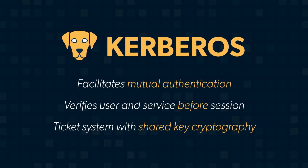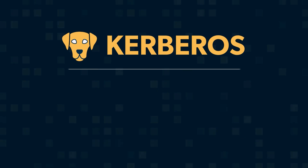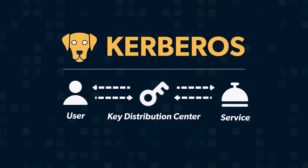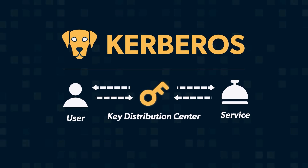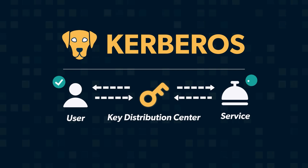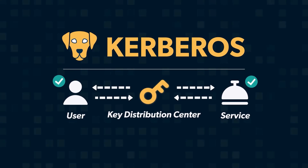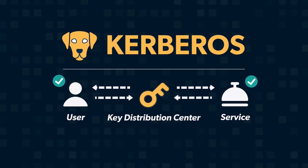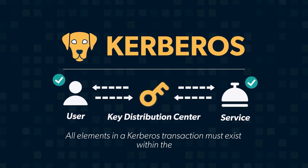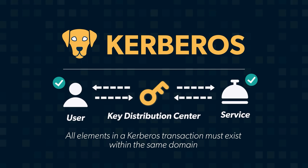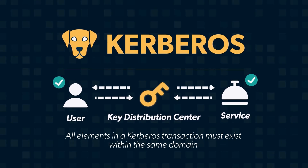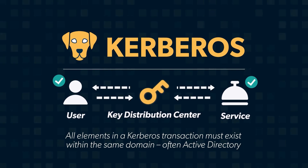It sends a series of encrypted messages and tickets amongst the user, the service, and a key distribution center, which is hosted by the domain controller. In this transaction, both the client and the service authenticate their identities before the client can begin a session. It's important to note that all elements in a Kerberos authentication transaction must exist within the same domain. Because Kerberos is commonly used by Microsoft, that domain is often Active Directory.